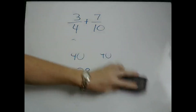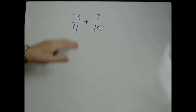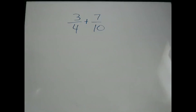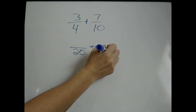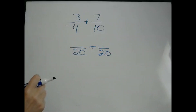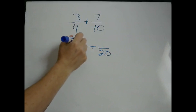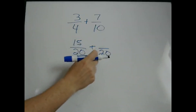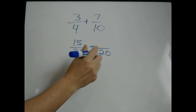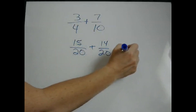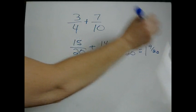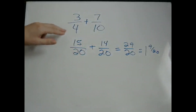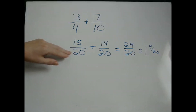Another way to do this: if you can recognize that both 4 and 10 will go into 20 evenly, then you can make your common denominator 20. How do you get from 4 to 20? You multiply by 5, so now we have to multiply 3 by 5, which is 15. How do you get from 10 to 20? You multiply by 2, so we multiply 7 by 2, which is 14. Keep the same denominator and add: 29 twentieths, or 1 and 9 twentieths — the same answer as before, but faster because we found the least common denominator, so we didn't have to reduce.